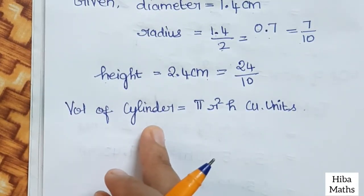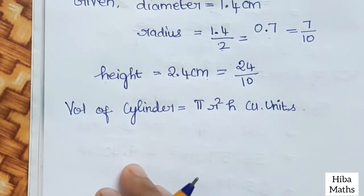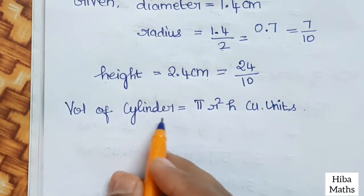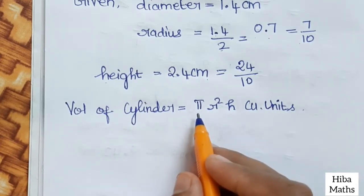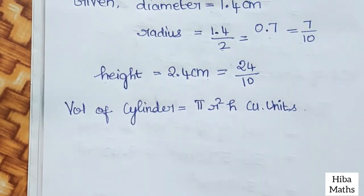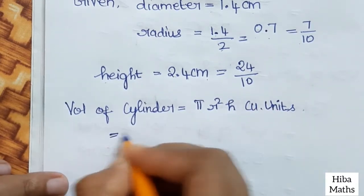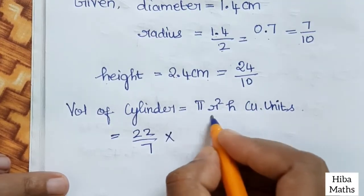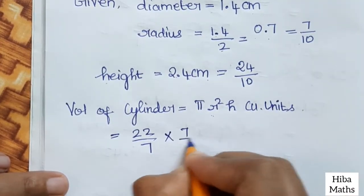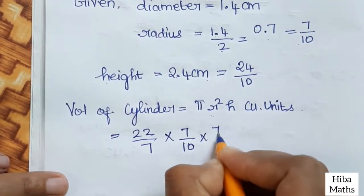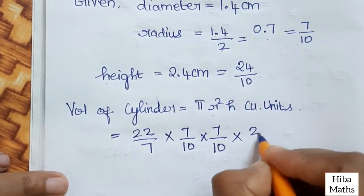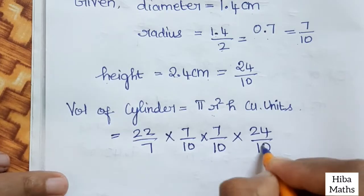We need to find the volume of the cylinder and the volume of the cone. Volume of cylinder formula is πr²h cubic units. Pi value is 22/7, r is 7/10, and height is 24/10.